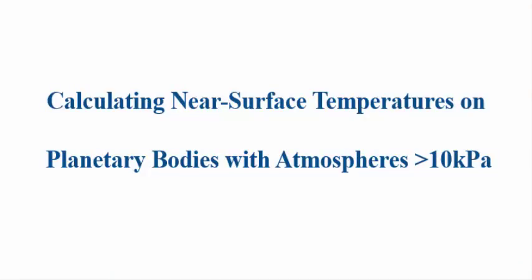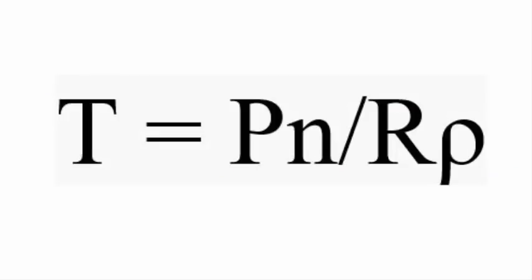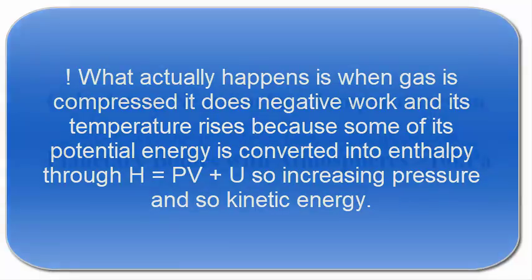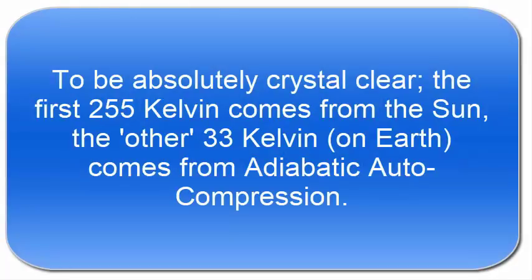Schmidt et al. say it comes from the greenhouse effect of water vapor, CO2, and the greenhouse gases. I think the ideal gas law here shows that it actually comes from auto-compression, adiabatic auto-compression. What is it? Well, this is what it is here: when a gas is compressed, it does negative work compressed by gravity. Its temperature rises because its potential energy is converted into enthalpy through this formula, so increasing pressure and so kinetic energy.